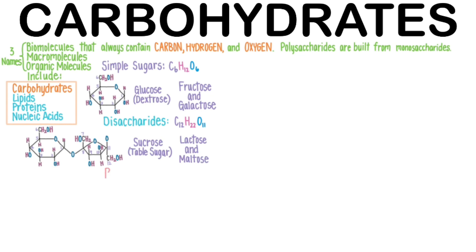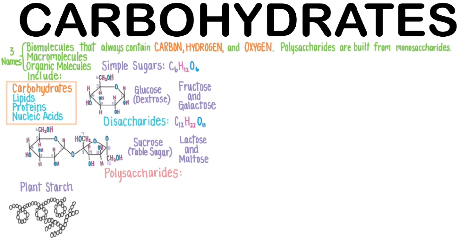And now onto the polysaccharides, the very large biomolecules that are built with many, many simple sugars. Plant starch is digestible by us using the enzyme amylase, which is made by our pancreas and our salivary glands. Amylase breaks down complex carbohydrates, such as starch, into many individual molecules of glucose. This occurs in the intestine, and then these glucose molecules are absorbed into the bloodstream. Potatoes and grains are well-known examples of starches.